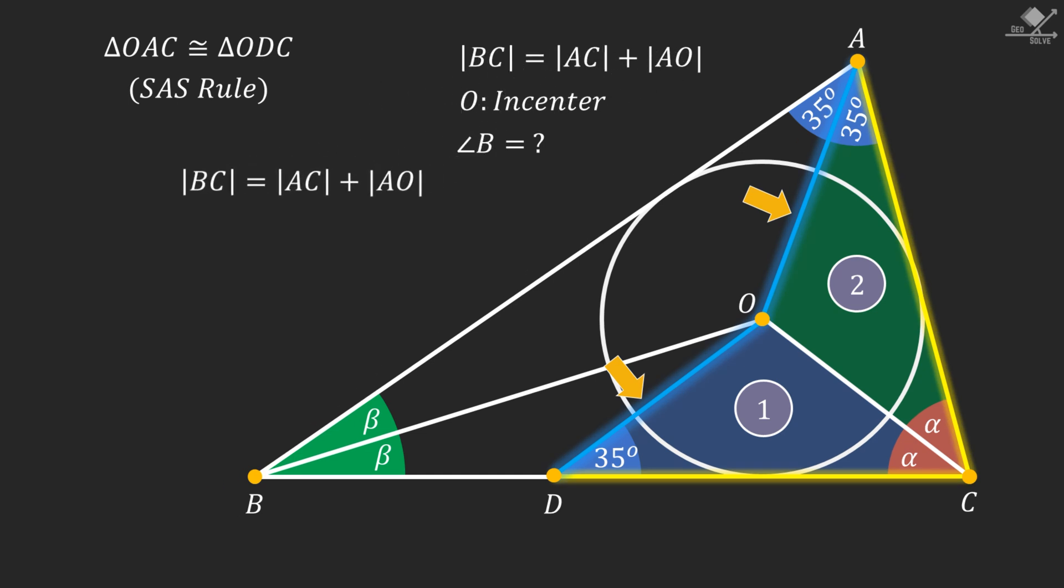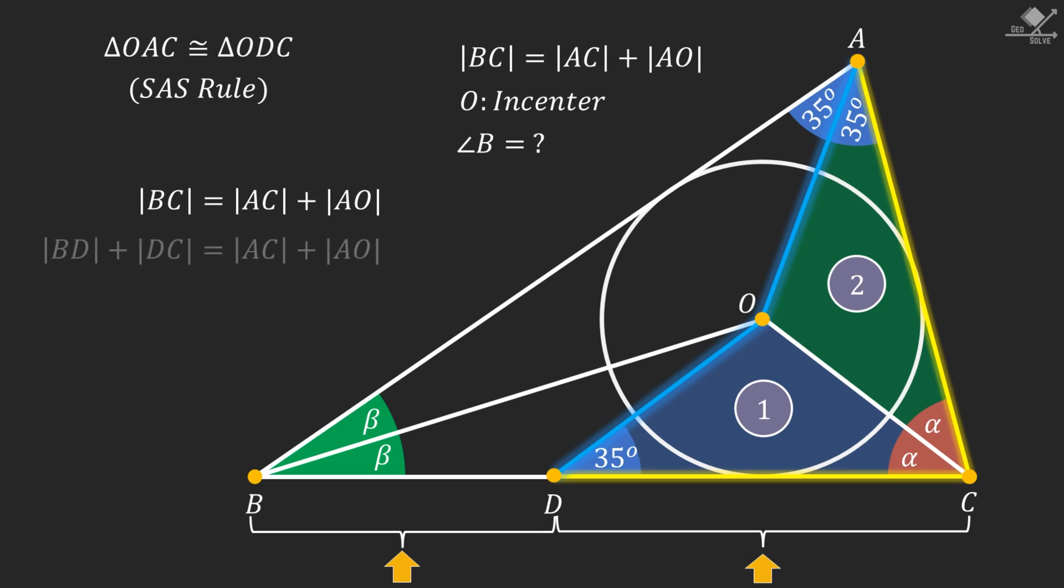We know that BC is equal to AC plus AO. And BC can be written as the sum of BD and DC. So let's write BD plus DC instead of BC.